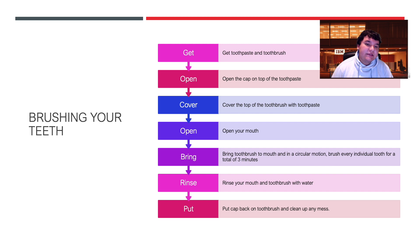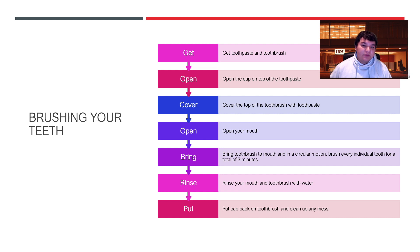Everyone knows how to brush their teeth, but each individual instruction has to be detailed enough so that people know what step to do and when to do it. Even though brushing your teeth might be a simple task, I need at least seven steps in my example — but you can go into much more detail. So algorithms are just detailed instructions of what to do.